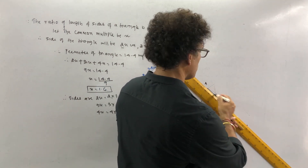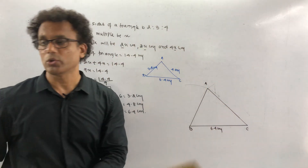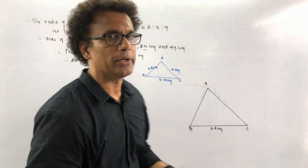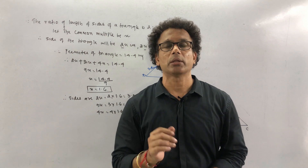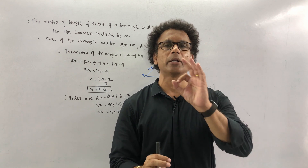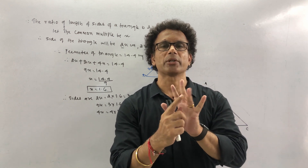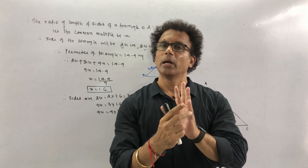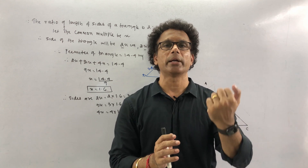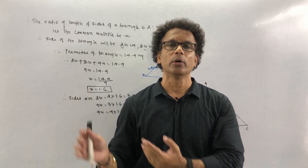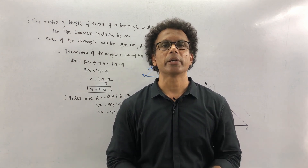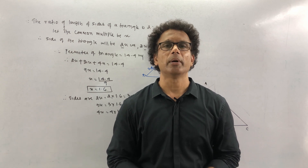The calculation part was very important; the drawing part was very easy. This is how you do sum number 3 from your problem set. I hope everybody understood construction — it is a very simple chapter. Just three exercises: addition, subtraction, and perimeter. We finished this video here; the rest will continue in the next video. Till then, bye bye, take care.